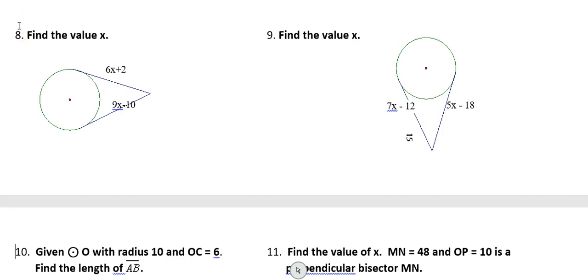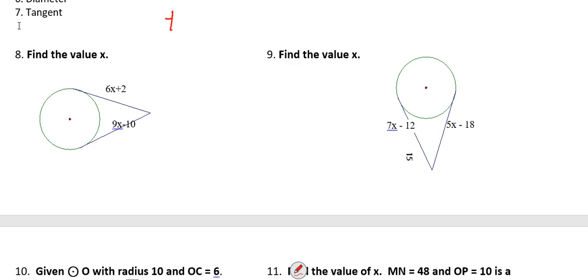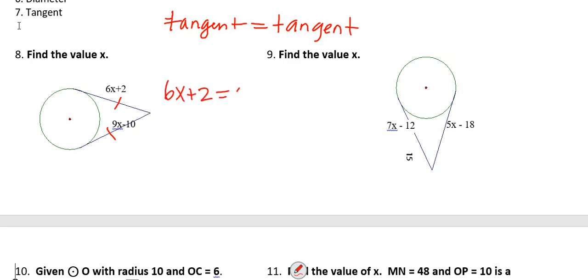For numbers 8 and 9, the formula we use is tangent equals tangent. We know that these two tangents are congruent to each other, so we set up 6x + 2 = 9x − 10. Subtract 6x from both sides — that gives us 3x. Add 10 to both sides — that gives us 12. Divide both sides by 3, so x = 4.